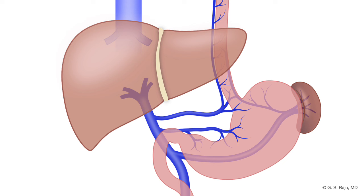Let us focus on the critical anatomy that is important for clinicians. The small intestine and the large intestine are drained by mesenteric veins — the superior mesenteric vein and inferior mesenteric vein. The inferior mesenteric vein drains the left side of the colon and rectum, and joins the splenic vein.